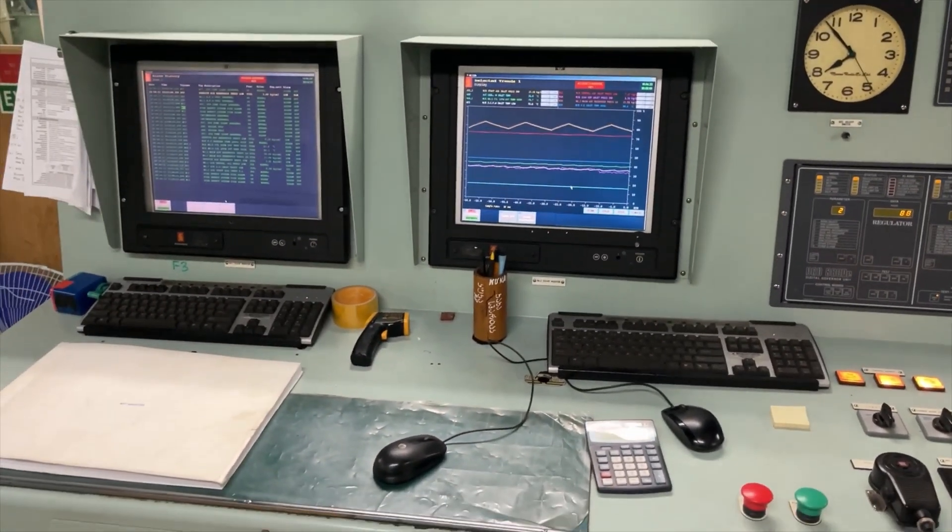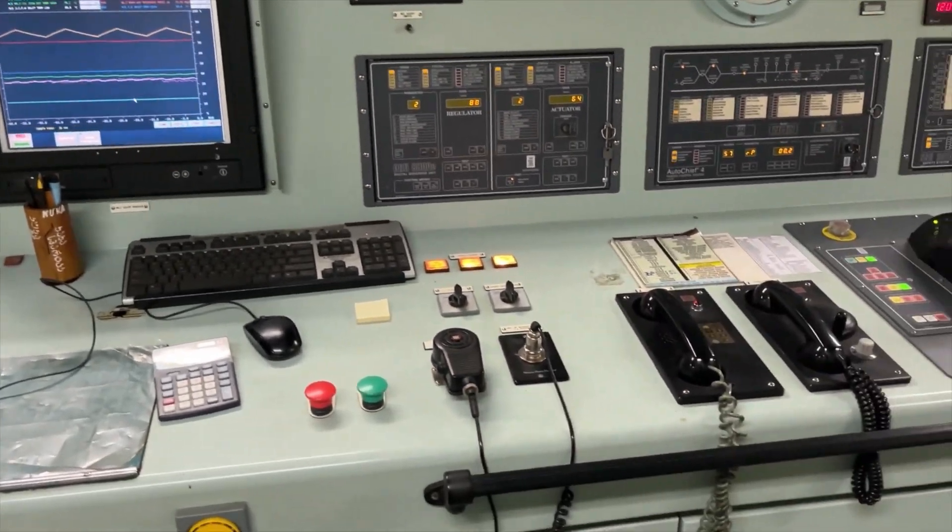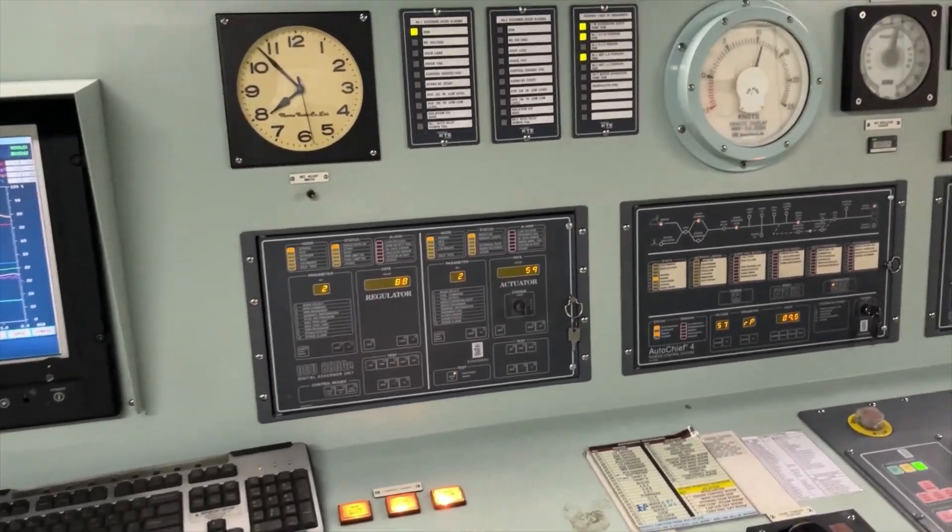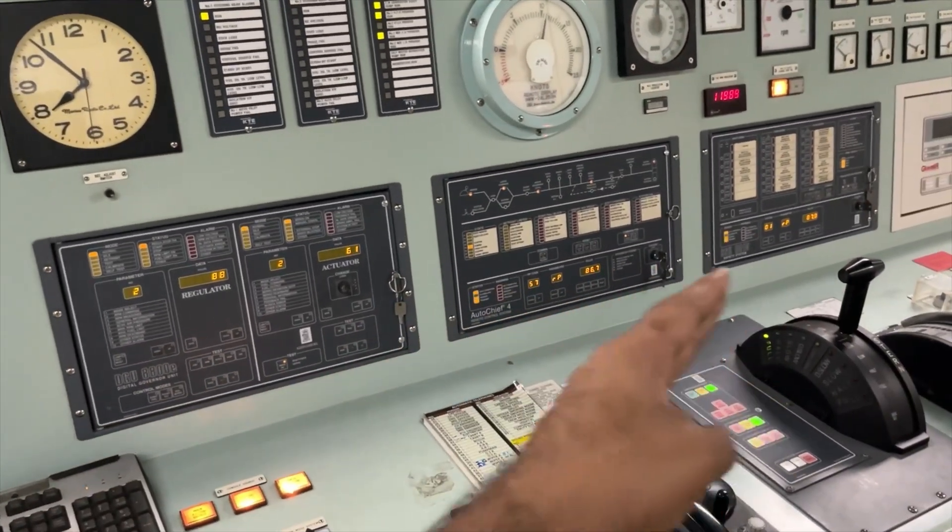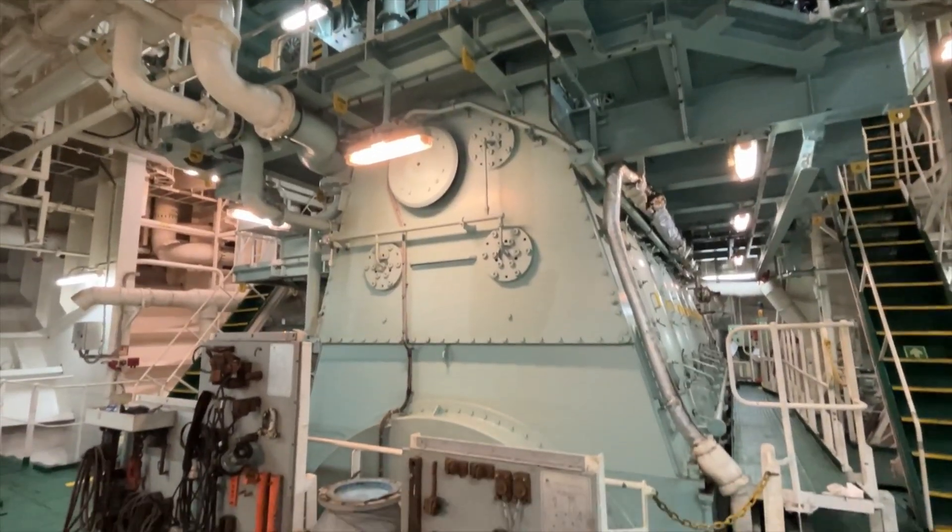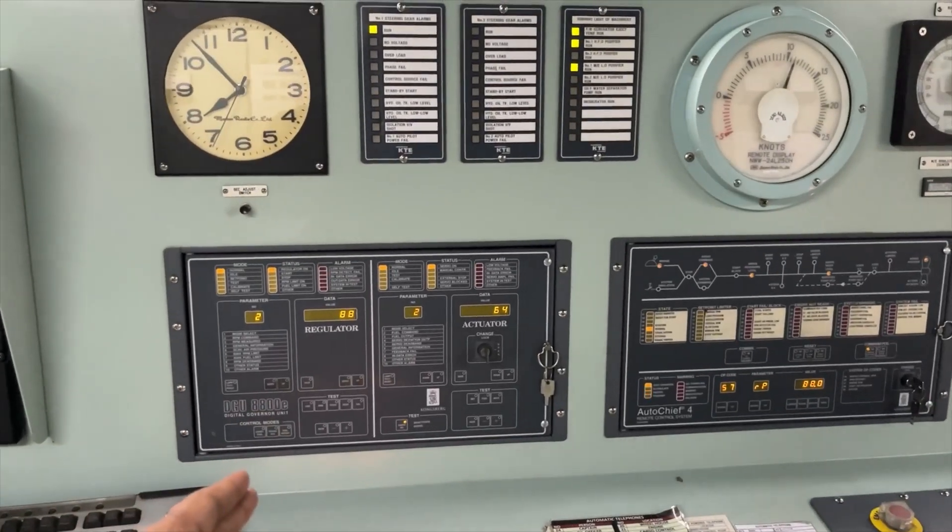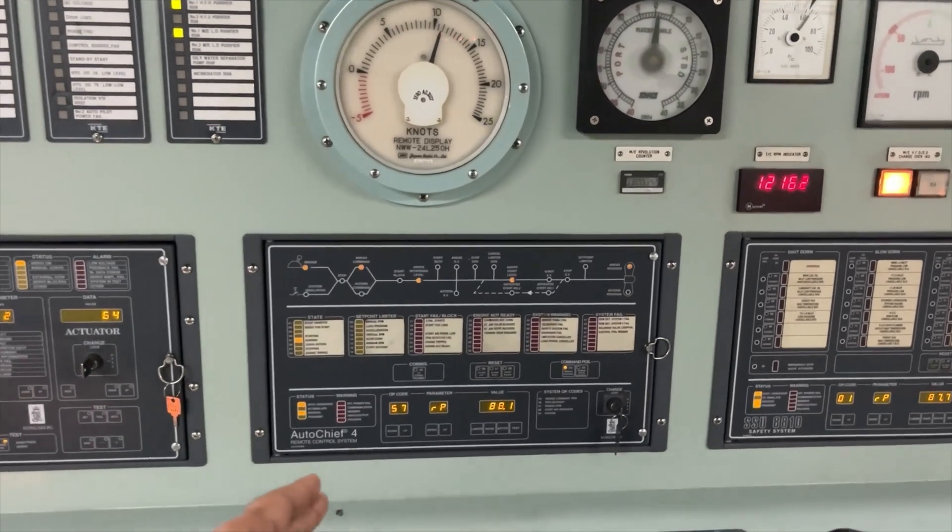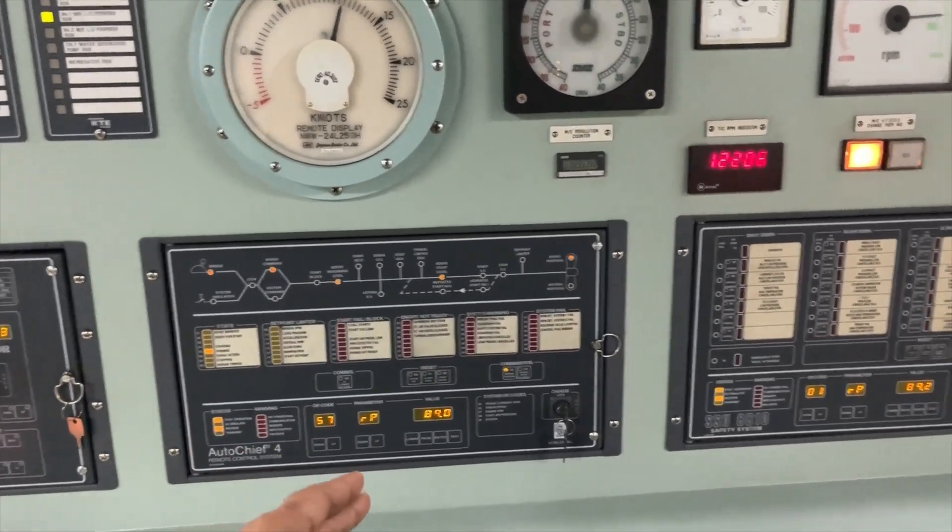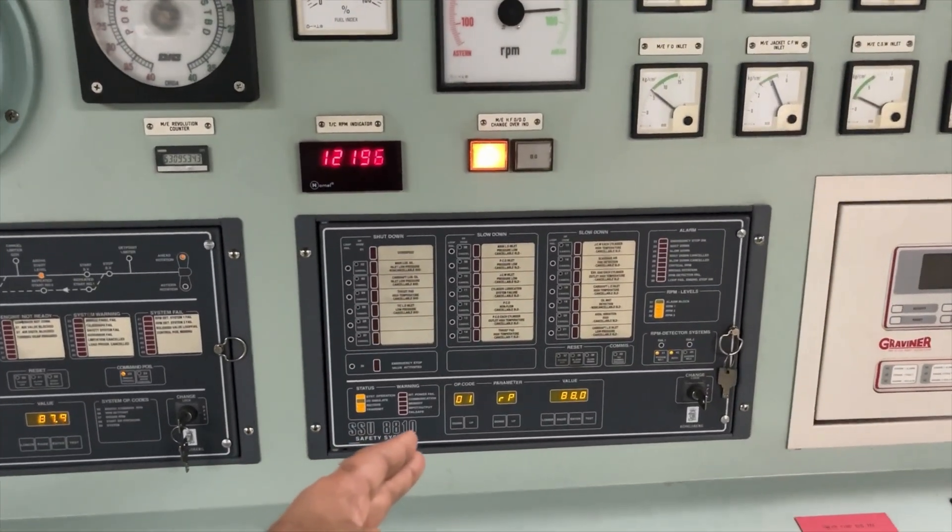Next to this alarm monitoring panel you will find these three units which are for the main engine. This is the governor control unit and this is the remote control system for main engine only, and this is the safety system for main engine.